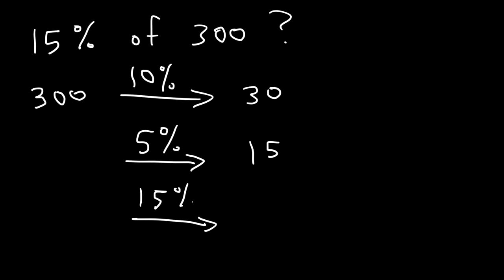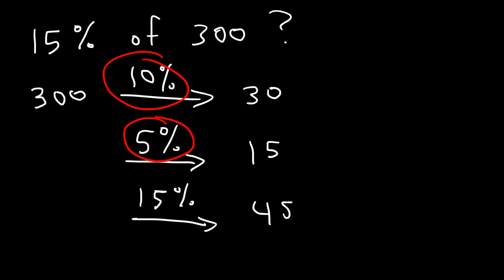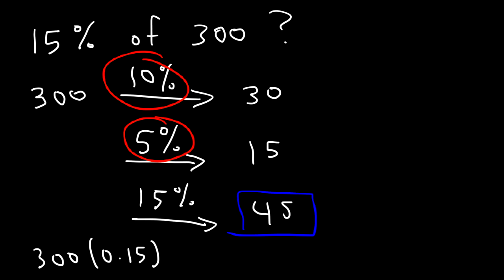Now 15% is the sum of 10% and 5%. So all we need to do is add 30 and 15, which is 45. So 45 is 15% of 300. Let's confirm the answer with the calculator: 300 times 0.15 is 45. So you can check your answer that way if you want to.